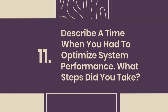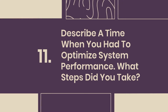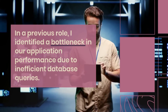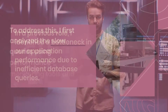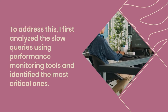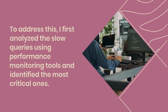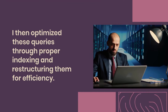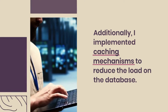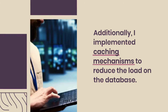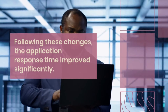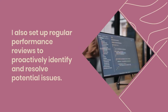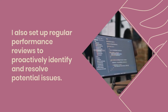Question 11: Describe a time when you had to optimize system performance. What steps did you take? In a previous role, I identified a bottleneck in our application performance due to inefficient database queries. I first analyzed the slow queries using performance monitoring tools and identified the most critical ones. I then optimized these queries through proper indexing and restructuring them for efficiency. Additionally, I implemented caching mechanisms to reduce the load on the database. Following these changes, the application response time improved significantly. I also set up regular performance reviews to proactively identify and resolve potential issues.